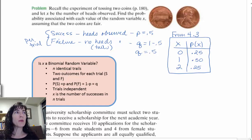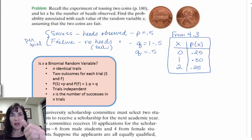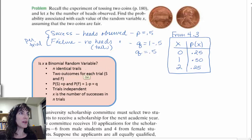And x, in this case, is the number of heads observed. So we're looking at n identical trials. So is that the case for flipping the two coins? Yes, because each trial is handled the same way. We just flip the coin and we record the outcome. So they're identical trials. So we have that.